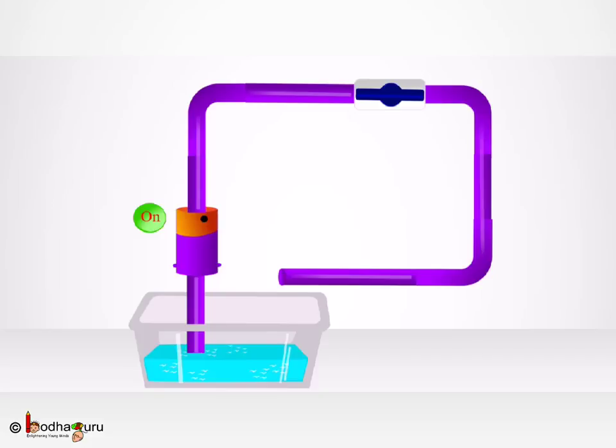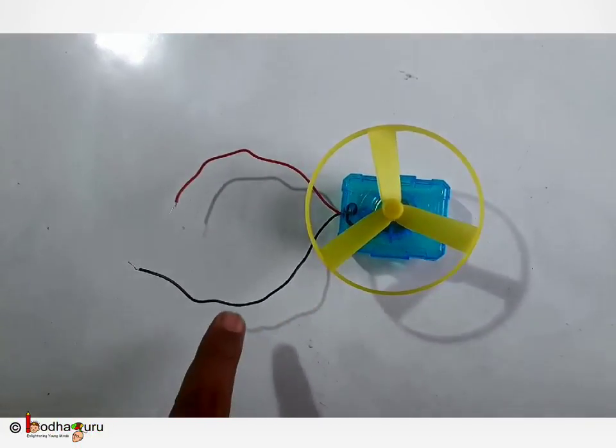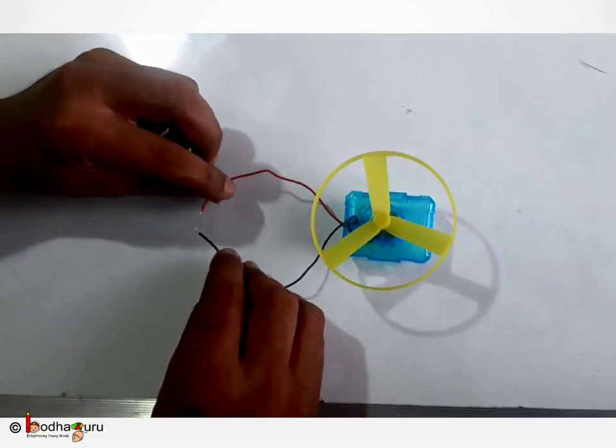Hello friends, in our last lesson we took an analogy of flow of water through a pipe. This lesson we will use the same to understand what is electric current. Let us take a copper wire and attach it to a small electrical appliance, say a small fan. Let us attach both ends of the copper wire to both ends of the fan. Does it run? No.